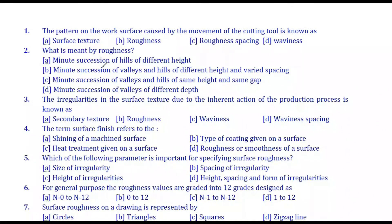First question: the pattern on the work surface caused by the movement of the cutting tool is known as what? Roughness means minute succession of values and hills of different height and varied spacing. The answer is option B: minute succession of values and hills of different height and varied spacing.